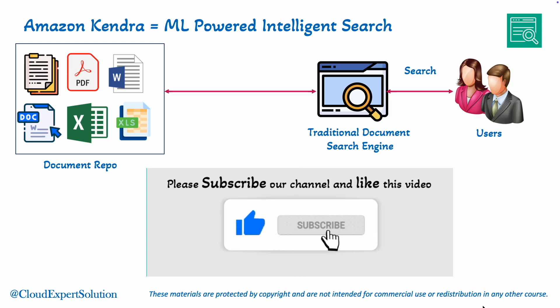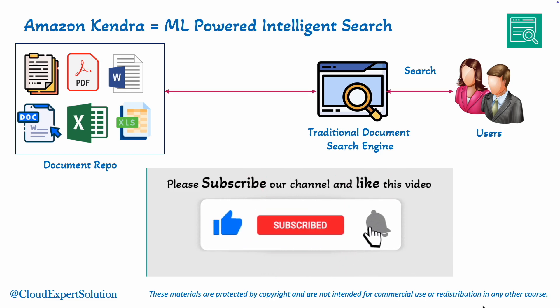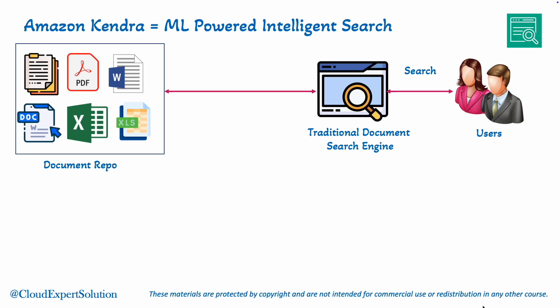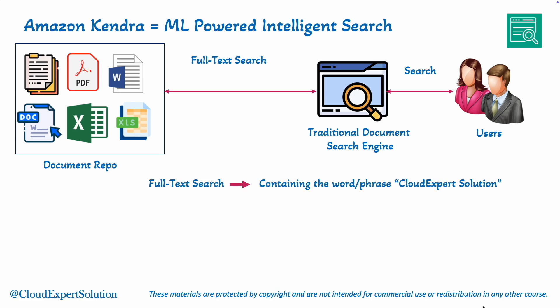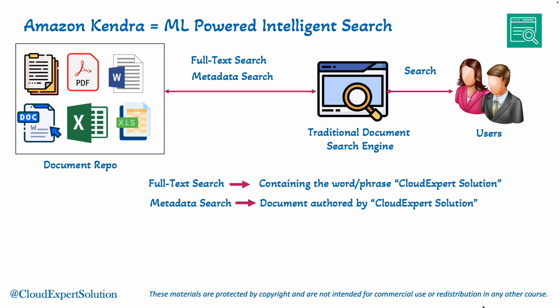When users search through these documents using a traditional search engine, the engine relies on specific methodologies such as Full Text Search. In Full Text Search, it scans the entire content of documents for keywords or phrases. For example, if I search 'Cloud Expert Solution,' it will look for that phrase in all the documents. Then using Metadata, search is based on structured information like titles, authors, tags, or dates. For example, it may look for documents authored by the Cloud Expert Solution team.